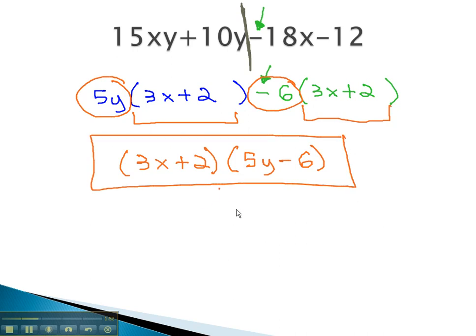These are the factors that when multiplied together will give us the original problem. We can quickly check this answer by multiplying out 3x times 5y to get the 15xy, 3x times negative 6 to get the negative 18x, 2 times 5y to get the 10y, and 2 times negative 6 to get the negative 12.